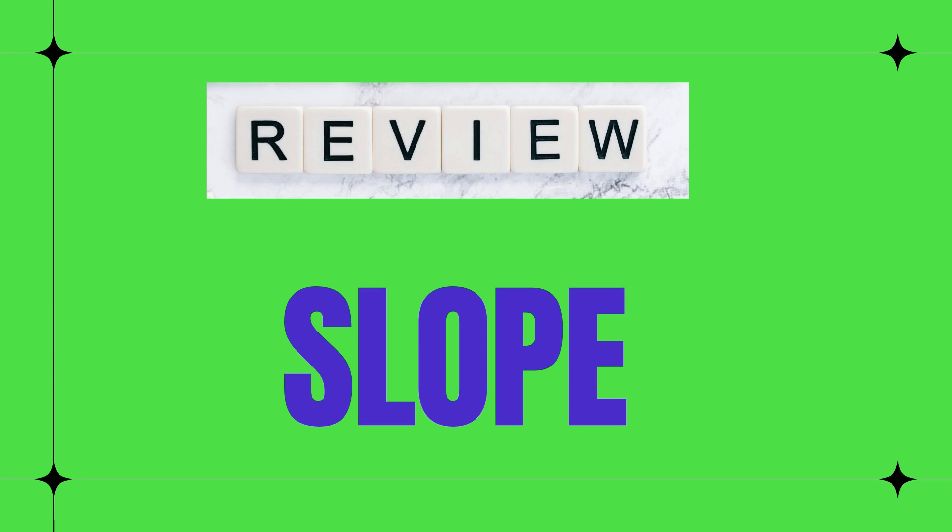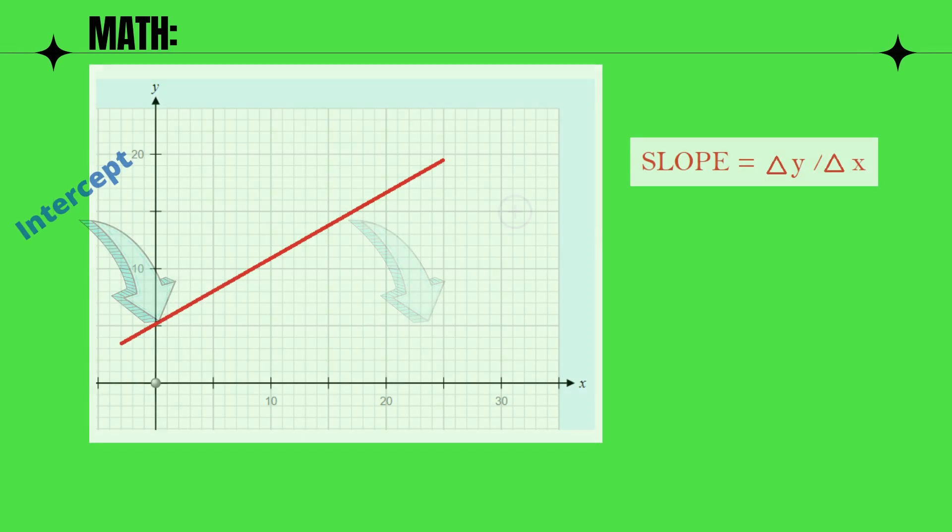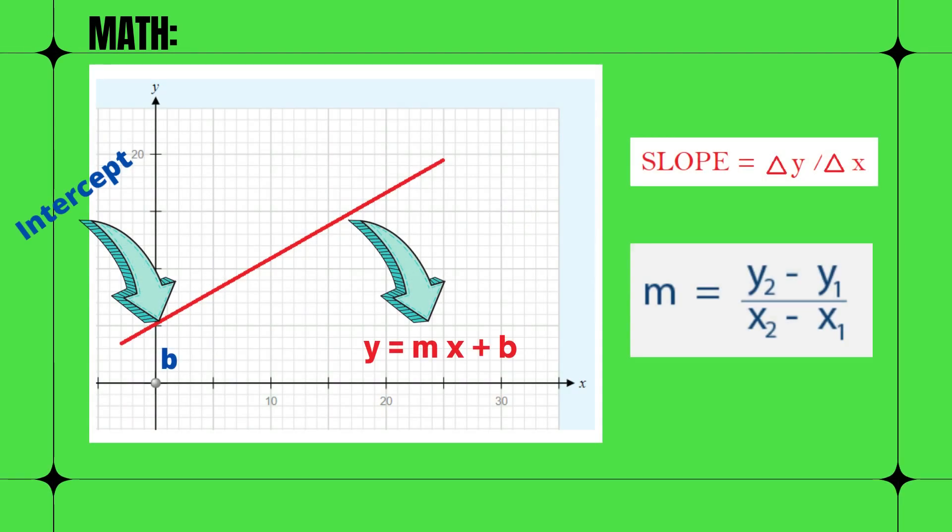Let us recall the concept and formula in calculating slope. A straight line graph has a general form y is equal to mx plus b. In this graph, m is the slope. It is defined to be the rise divided by the run of the straight line.